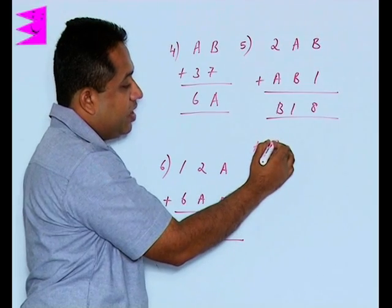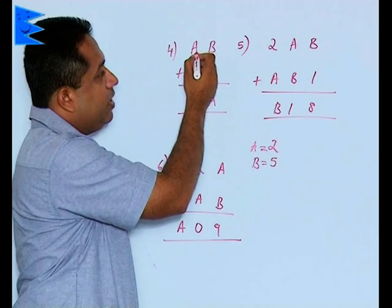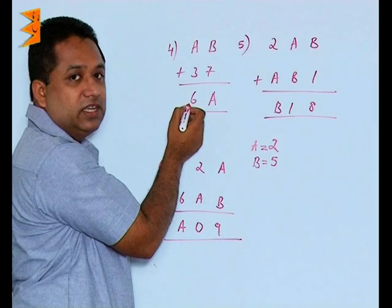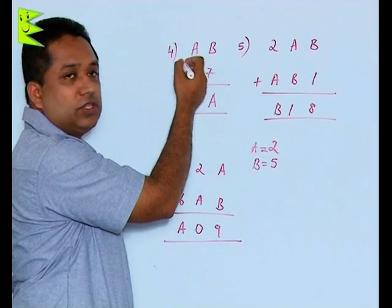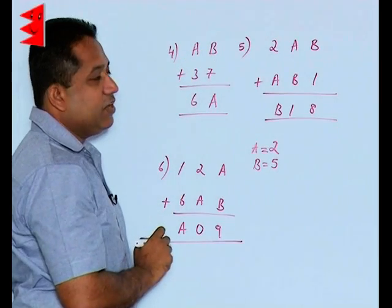The reason I am explaining once more. If I'm going to take the value of A more than 4 or equal to 4, then it is going to exceed this tens digit that is 6. So we cannot take a digit which is more than or equal to 4.